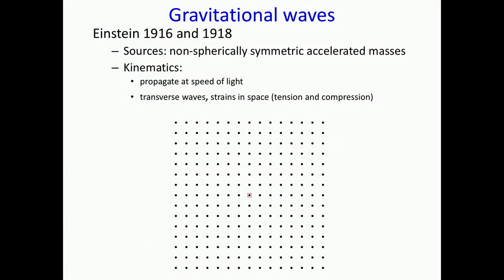The most important parts are that gravitational waves move — and we now think we know — they travel at the velocity of light. They're generated by accelerating masses. Things that do that include collisions or objects going around each other — those are accelerated motions that make gravitational waves.